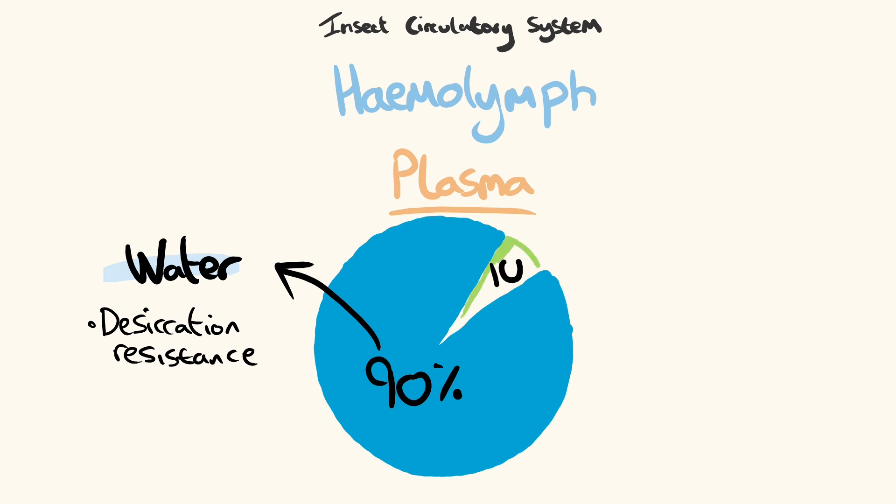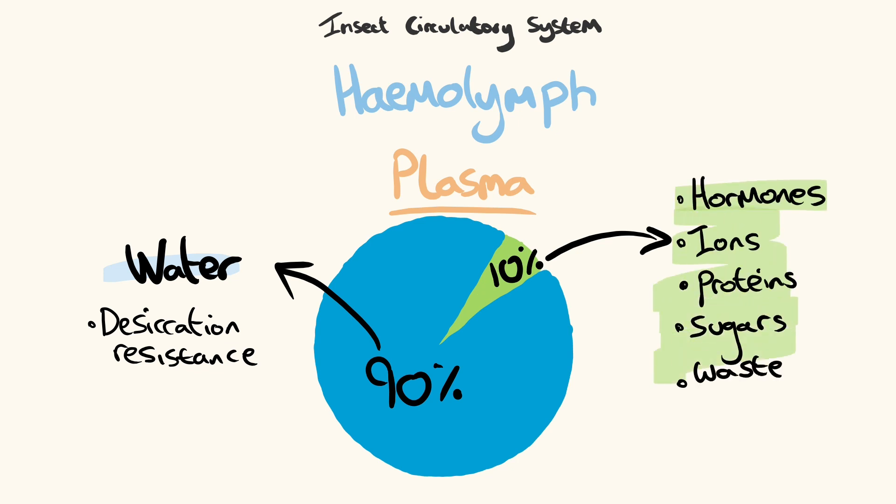The remaining 10% of plasma consists of compounds such as hormones, ions, proteins, sugars, and waste products. These are transported in and out of the haemolymph as required upon direct contact with the relevant body cells.